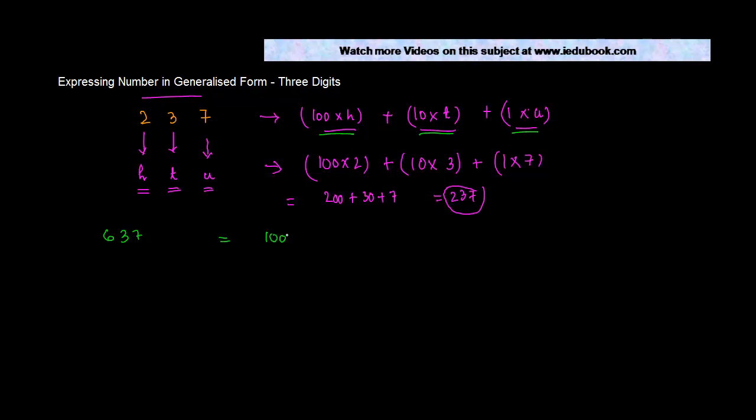You will write it as 100 into the unit at H, which is the hundredth place, 6, plus 10 into 3. 3 is the unit at the tens place. Plus 7 into 1. 7 is basically the digit at the units place.